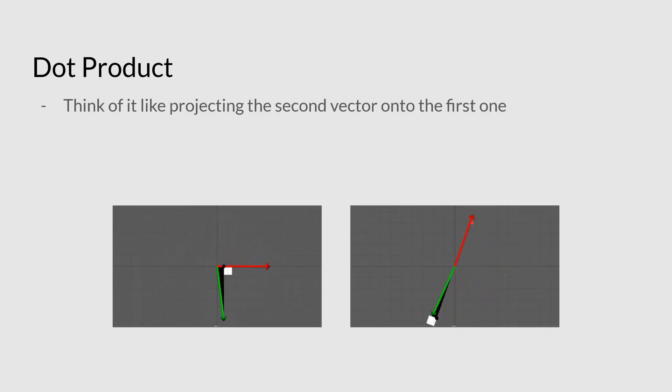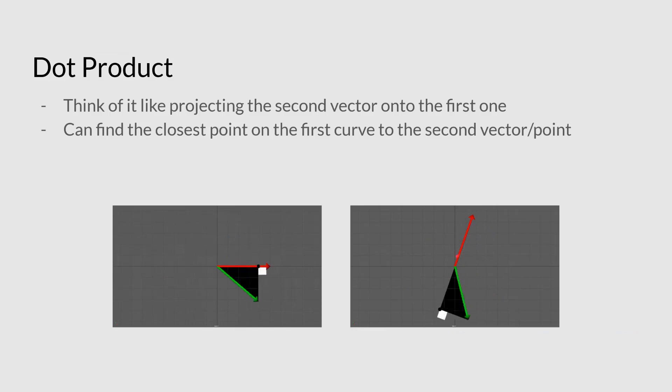So this can also be used to help us find the actual closest point on the first vector. So if you have a line or a vector or a line segment, you can figure out any point in space, you can figure out the closest point to it.